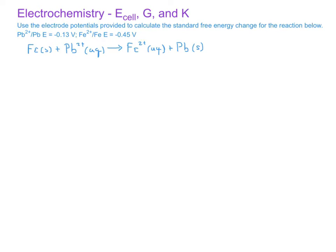In this example, we're asked to use the electrode potentials provided to calculate the standard free energy change for the reaction involving one mole of iron metal reacting with one mole of lead ions to produce one mole of iron two plus ions and one mole of lead metal. To begin this problem, since we're looking for the standard free energy change and we're provided with the electrode potentials, we probably first want to calculate the standard cell potential. We recall that we do that by taking the electrode potential for the cathode and subtracting from that the electrode potential for the anode.